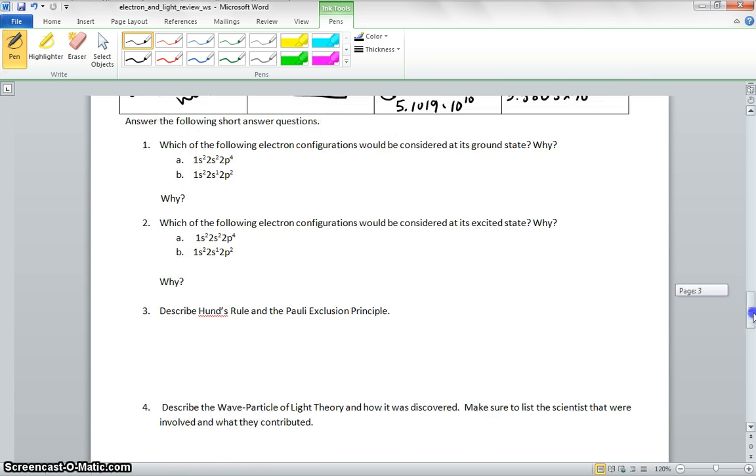Now we're going to look at the following questions. Which of the following electrons would be considered to be at ground state and why? So 1s2, 2s2, 2p4, and then we have 1s2, 2s1, 2p4. The one that's going to be at ground state is going to be A, because it has the correct electron configuration.